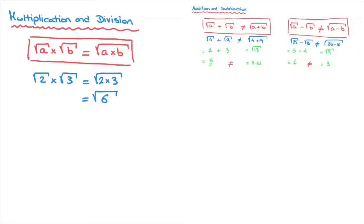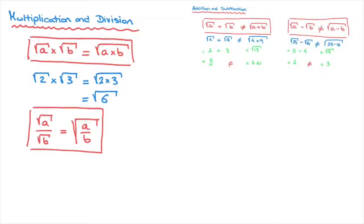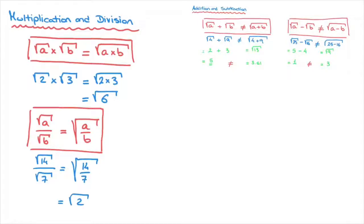There is a similar rule for division. The square root of a over the square root of b will always equal the square root of a over b. Make a note of this formula as well — it's an absolute must-know when working with square roots. For example, the square root of 14 over the square root of 7 equals the square root of 14 over 7, which equals the square root of 2.